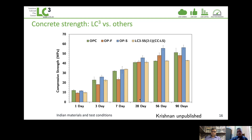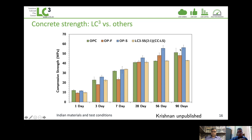In terms of strength, we see a similar trend to what we observe in standard mortars. Despite having only 50 percent clinker, LC3 concrete achieves similar strength values at almost all ages. Even at one day, it's in the same range as concrete made with fly ash, slag, or even OPC. At 28 days it levels off to match Portland cement strength, and there is not much further growth at 50 or 90 days because the alumina reaction occurs at very early ages, producing a very dense microstructure early on.